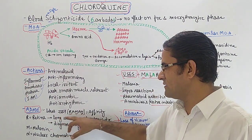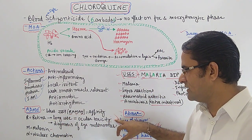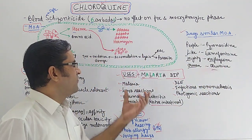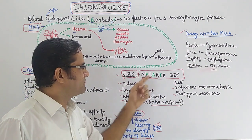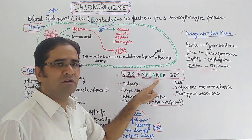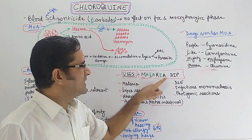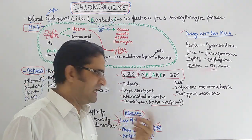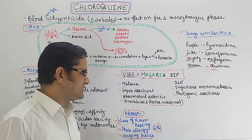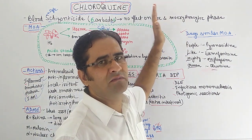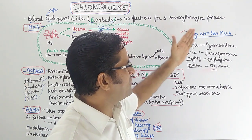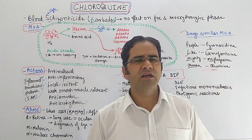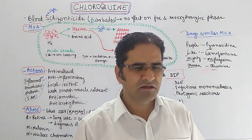Because of affinity for the retina, chloroquine causes ocular toxicity and can be used to diagnose eye cancer. For uses, remember 'MALARIA DIP': anti-malarial, lepra reactions, rheumatoid arthritis, anti-amoebic, discoid lupus erythematosus, infectious mononucleosis, photogenic reactions. Adverse effects: LPG — loss of vision, loss of hearing, photo allergy, graying of hairs. Drugs with similar mechanism: 'People Like Mighty Queen' — Pyronaridine, Lumefantrine, Mefloquine, and Chloroquine.